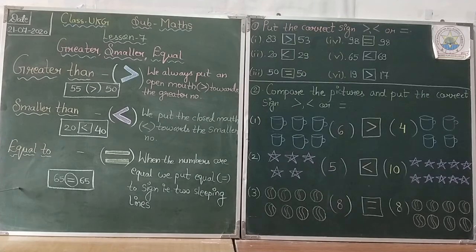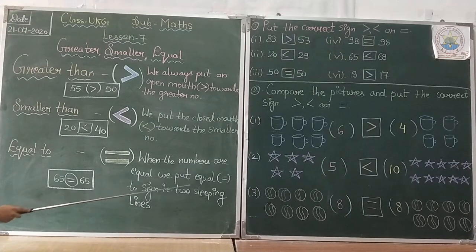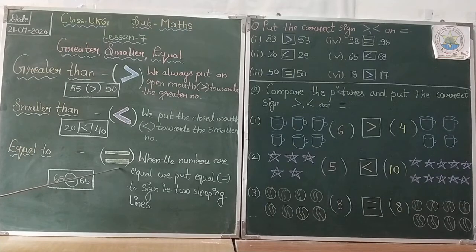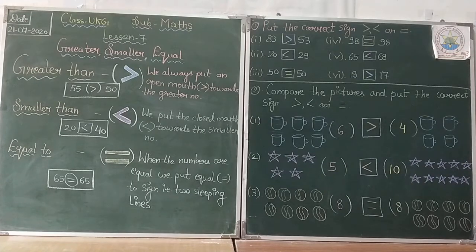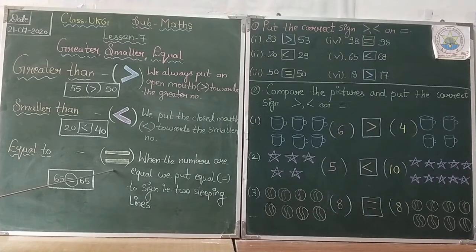The third is equal to. Equal means same — ایک جیسا۔ When the numbers are equal, we put the equal to sign, that is two sleeping lines. تو جب same numbers دیئے ہوتے ہیں — جیسے کہ یہاں example ہے: 65 and 65 — تو یہ 65 اور 65 equal ہو گئے۔ تو اس کے سامنے ہم equal to sign put کریں گے۔